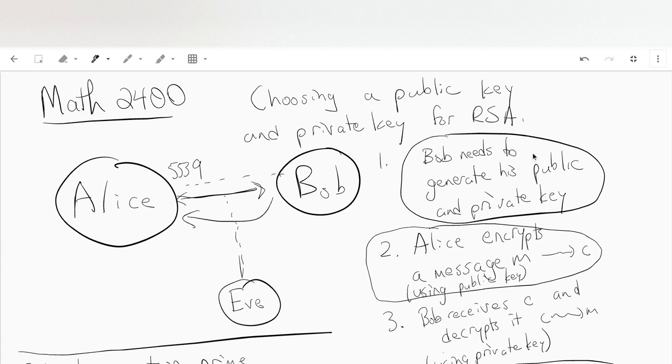so we already saw that Bob has generated his public and private key and Alice has taken the message, her secret message she wants to send, m, which is some integer, and computed m to the power e to get her ciphertext,